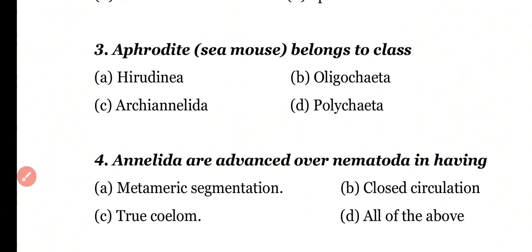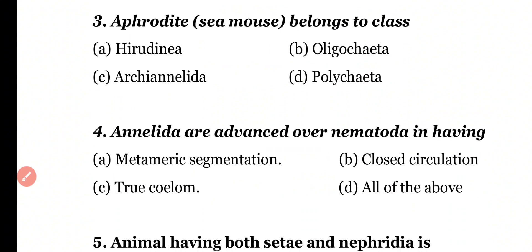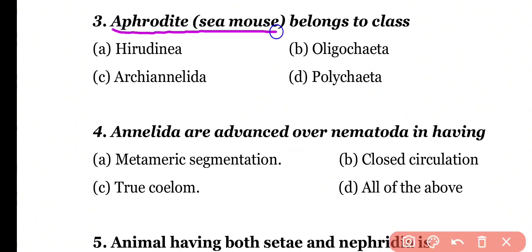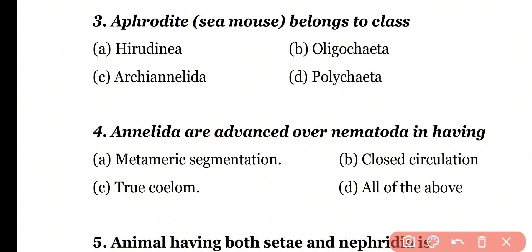Question number 3. Aphrodite, which is also known as sea mouse, belongs to class: Hirudinea, Oligochaeta, Archiannelida, or Polychaeta. Correct answer is option D. Aphrodite, or sea mouse, belongs to class Polychaeta.